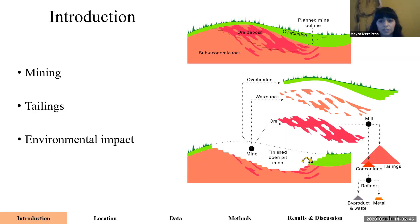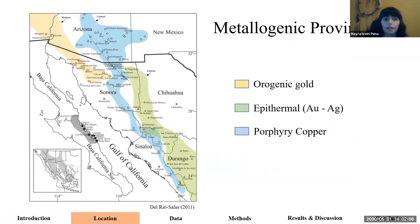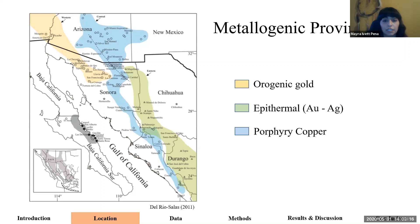This happens a lot in Mexico, especially in states with a lot of mining activities like Sonora, a state located in the northwestern side of the country, and is characterized by three metallogenic provinces: the orogenic gold province, the epithermal province, and the porphyry copper province. This last one, the porphyry copper, contains the study area, which is the Nacozari mining district, and is the second most important porphyry copper district in Mexico.